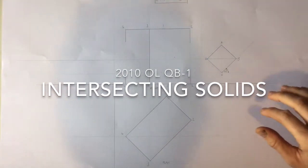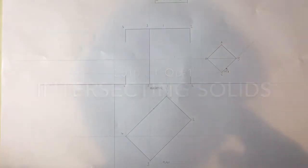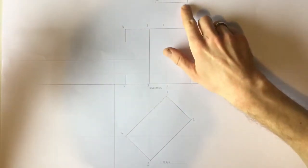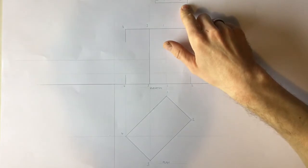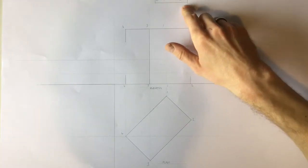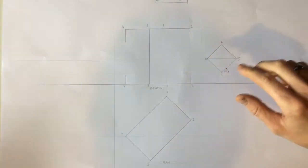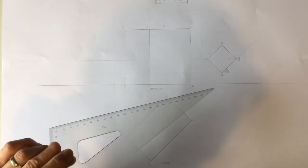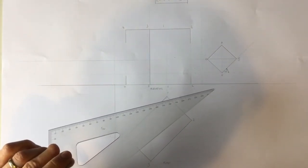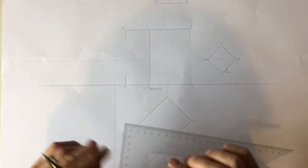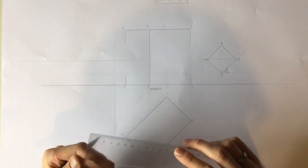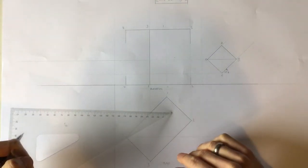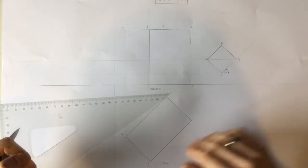Okay folks, here we are with the 2010 RD level question B3 on B1, sorry, on intersecting solids. So I've gone ahead and set up as much of the drawing as I could. So it's a fence post type of a thing and there it is. Shows a portion of a rectangular post and one of square rails from a wooden fence. Draw the given plan and elevation and project an end view of the post and rail.